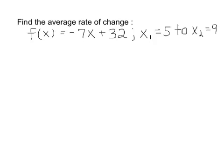For this problem, we're asked to find the average rate of change for the given function f(x) = -7x + 32, from x sub 1, the first x equaling 5, to x sub 2, the second x equaling 9.